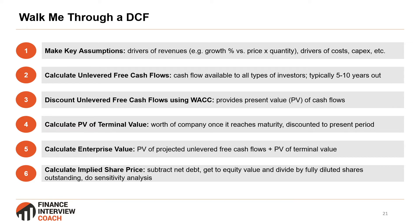The fourth step is to find what's called the terminal value. We only forecast out five to ten years because it's hard to project past that. So instead of projecting forever, we assume a terminal value — the company is worth this much at the end of the projection period — and we discount it back to the present.